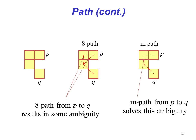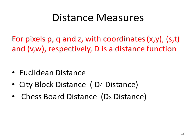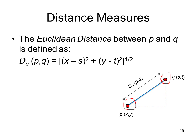Now we will move towards distance measures. For pixels p, q, and z with coordinates (x,y), (s,t), and (v,w) respectively, d is a function which is either Euclidean distance, city block distance (also called d₄ distance), or chessboard distance (d₈ distance). To calculate the Euclidean distance between p and q, it is calculated by √[(x-s)² + (y-t)²].